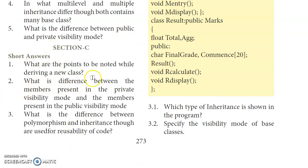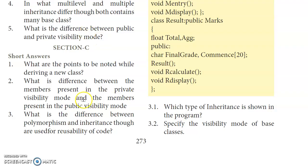What is the difference between members present in the private visibility mode and members present in the public visibility mode? The difference has already been explained in the 2-mark answer above — private and public visibility mode differences are noted there.